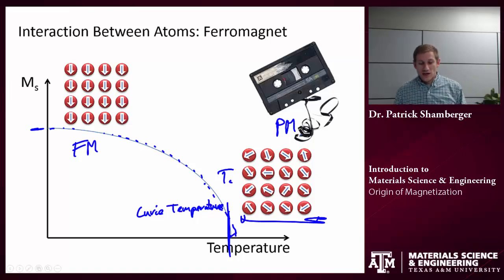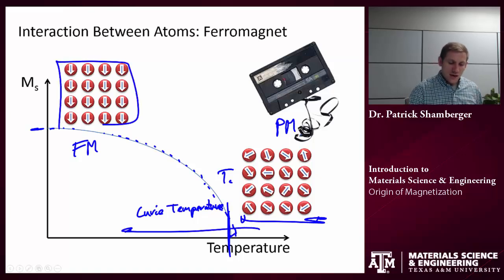Now, an important thing is that if I cool this system back down, once again, my magnetic atoms would again want to rearrange themselves, so they're all pointing in the same direction, but that doesn't necessarily have to be exactly the same direction as it was pointing originally. So that's where you can lose your information.